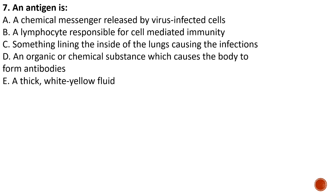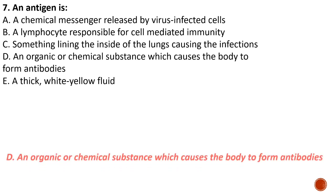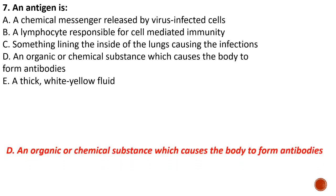Question number seven: an antigen is — A) a chemical messenger released by virus-infected cells, B) lymphocytes responsible for cell-mediated response, C) something lying inside the lungs causing infection, D) an organic or chemical substance which causes the body to produce antibodies, E) a thick white-yellow fluid. The answer is D — an organic or chemical substance which causes the body to form antibodies — that is the definition of an antigen.